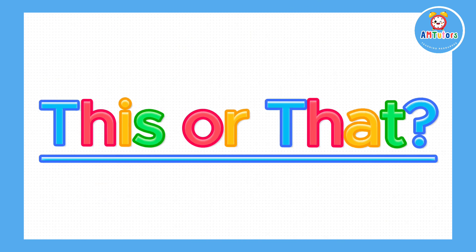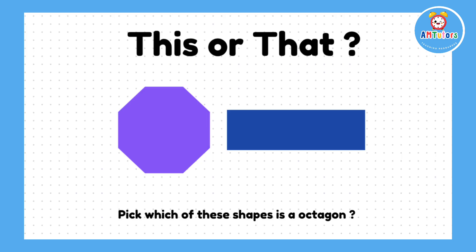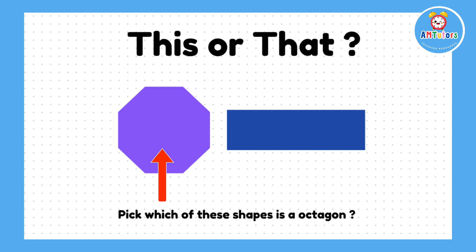Now that we've been introduced to the names of these shapes, we are now going to play a game of this or that. The game works like this: you'll see two shapes on your screen. When I say the name of one of the shapes, I want you to point to that shape. Let's see how many you get right.